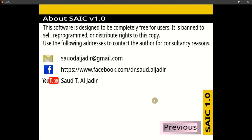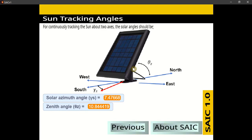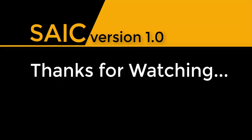This software is designed to be completely free for users. It is banned to sell, reprogram, or distribute rights to this copy. I made it to provide you with all solar angle values, in addition to tracking angles and the values for solar beam radiation at the specified time. I hope this program will help you more clearly understand the solar parameters and estimate the solar irradiance values with a good approach. That's it — thanks for watching.